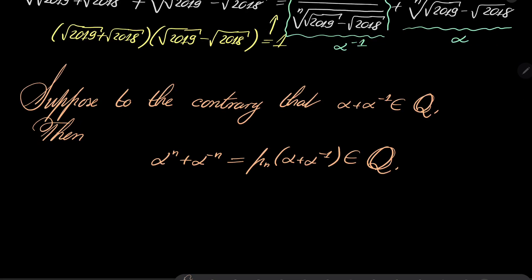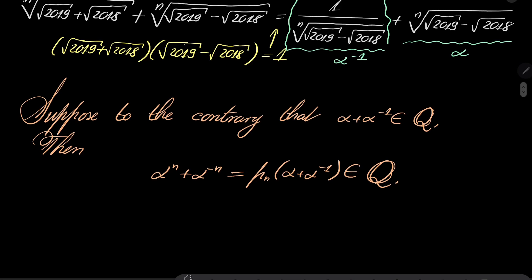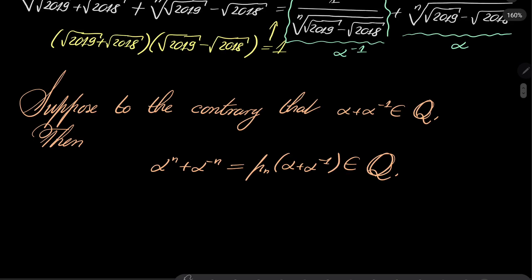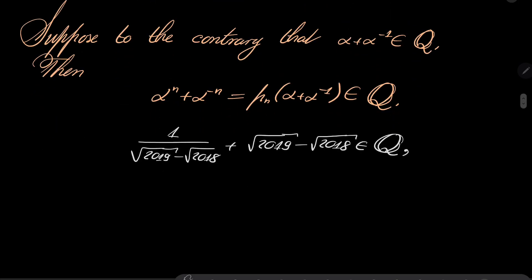But now we have some problem, because what is α to the power of n? Well, notice that if we take our number to the power of n, this outer root disappears, and we have just this. Alright, let's go one more step.